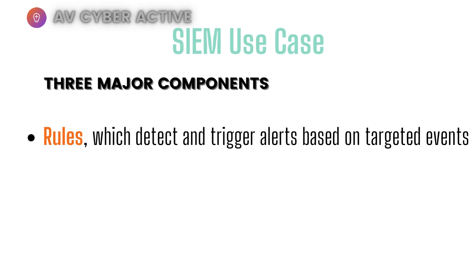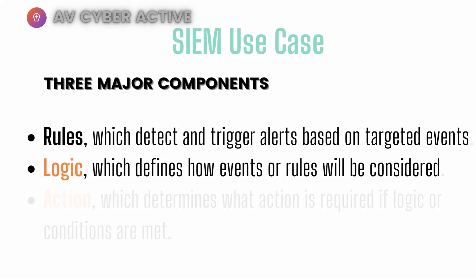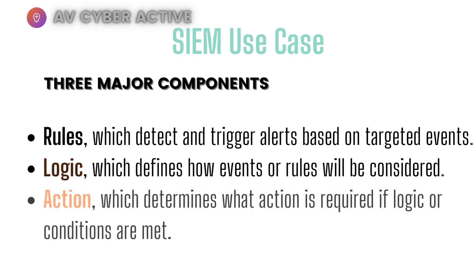The second component is the logic or the parameter. This defines how the events or the rules will be triggered or considered — this can also be expressed as a number of events required for a use case to trigger within a certain duration or time. The last one is the action, which is what you see in your dashboard, and it determines what action is required if the logic or conditions are met.